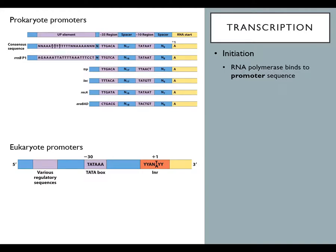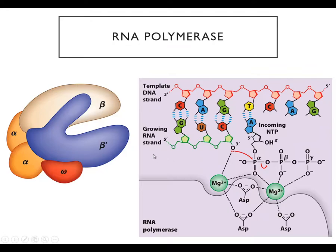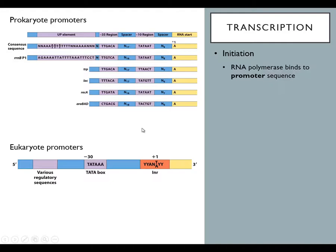These promoters and other nearby sequences are how the proteins involved in initiation know where transcription should occur. Every gene has its own unique promoter, which is important because otherwise you would have every gene being expressed in every cell all the time. The presence of certain proteins called transcription factors — which bind to these promoters — help recruit the RNA polymerase complex.